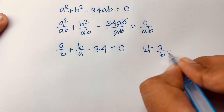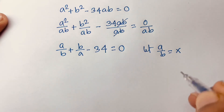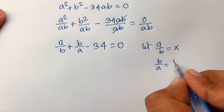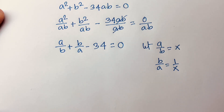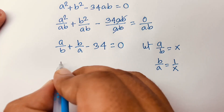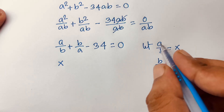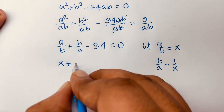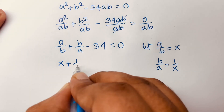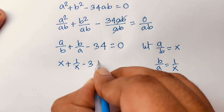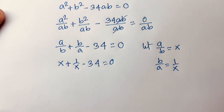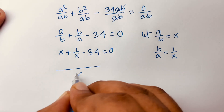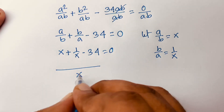Now let a over b equal x. In this case, b over a is equal to 1 over x. So the equation becomes x plus 1 over x minus 34 equals 0.